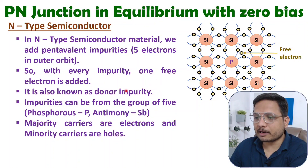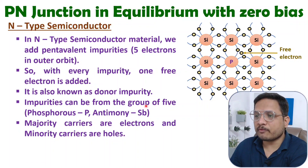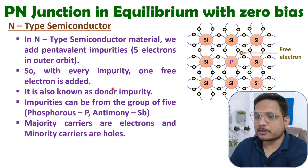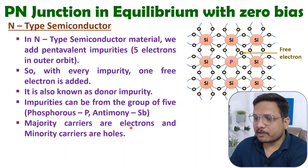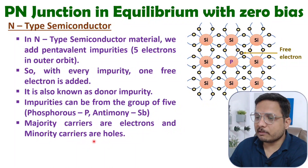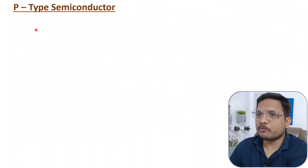These impurities can be from Group 5, meaning the outer orbit has five electrons. Examples include phosphorus and antimony. In N-type semiconductor, majority charge carriers are electrons and minority charge carriers are holes.